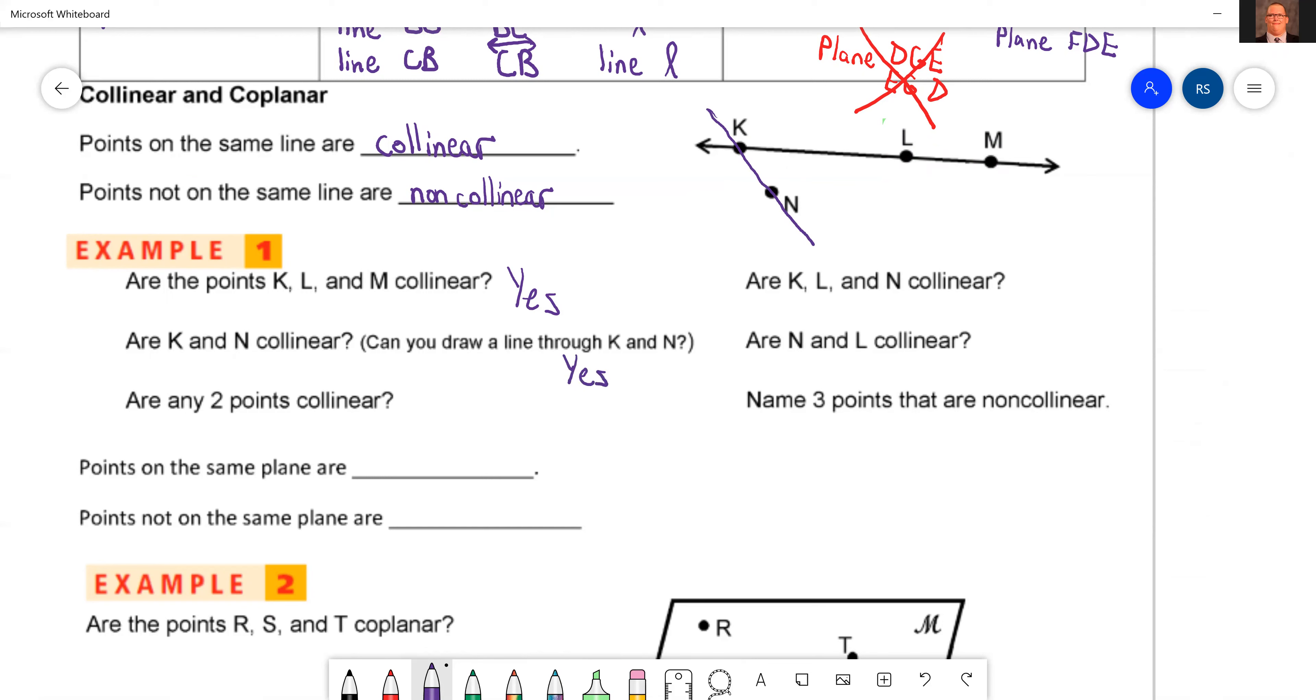Yep, I just did it. So yes, they're collinear. I skipped K, L, and N. Let's go back and grab them. So now they're asking about K, L, and N. We have to look at all three of those points as one. Are K, L, and N collinear? Are they all three on the same line? No.